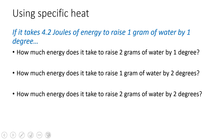Hi, this is Mrs. Nearing, and this video is going to be on calculating the amount of heat transferred. So think about the idea of specific heat. The specific heat of water is 4.2 joules per gram degrees Celsius. So what that means is it takes 4.2 joules of energy to raise 1 gram of water by 1 degree Celsius.